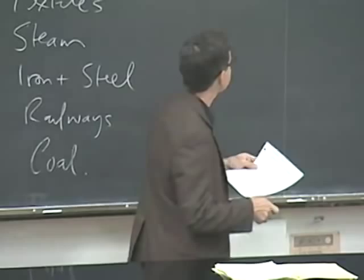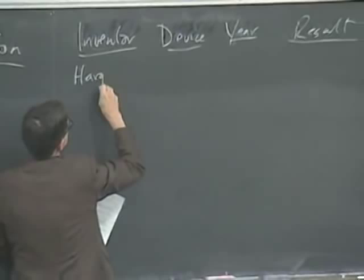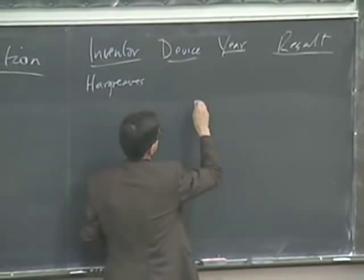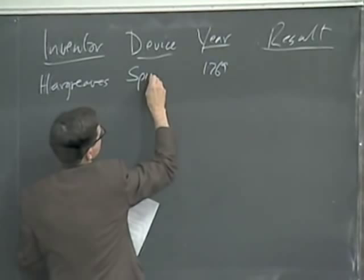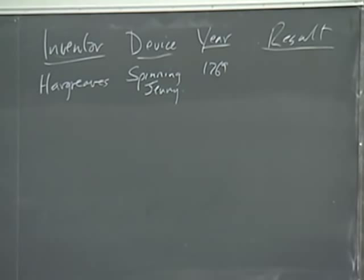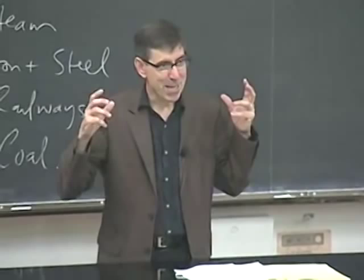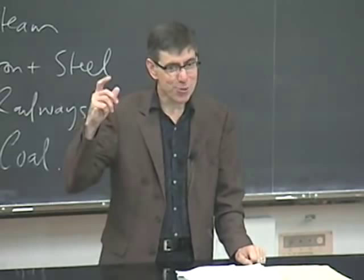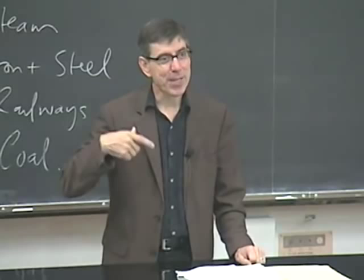The next major inventor in the Industrial Revolution period is a guy called Hargreaves, 1769, and the device is the spinning jenny. This was just a simple wooden metal machine, but one that replicated the action of hand spinning. Spinning was a major occupation for women in the pre-industrial economy because it took so long to spin a pound of thread.